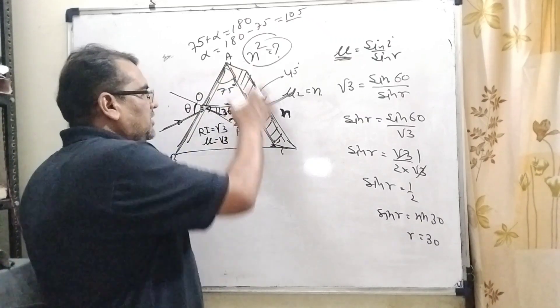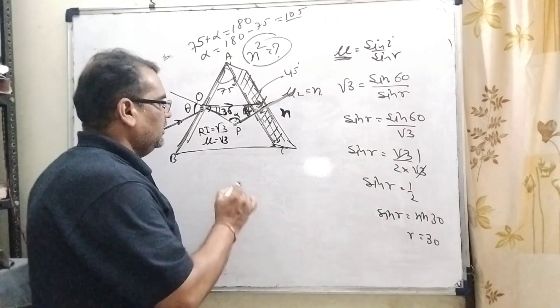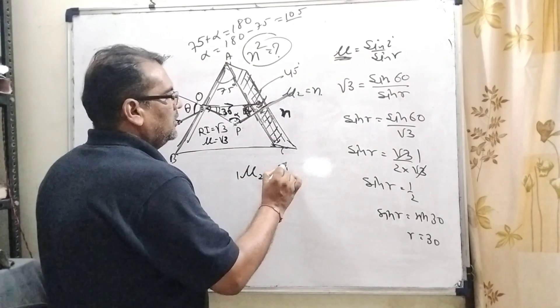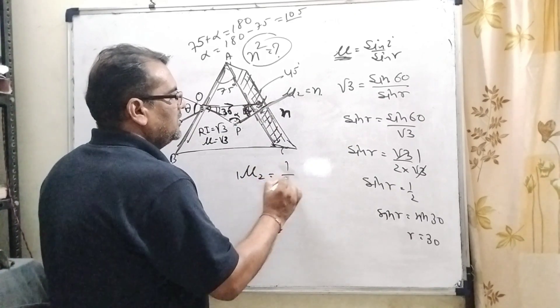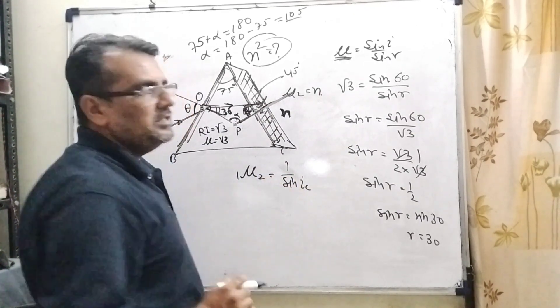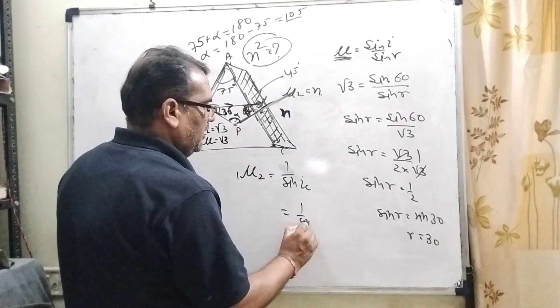Now for this surface, we are applying the concept of total internal reflection. So here this angle is 45 degrees. That is mu 1 upon mu 2 equals 1 upon sin IC. Here IC means critical angle. Critical angle is 45, so 1 upon sin 45.